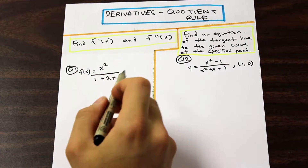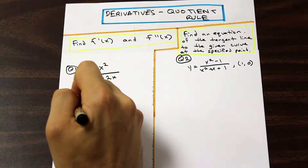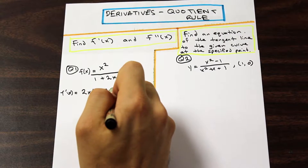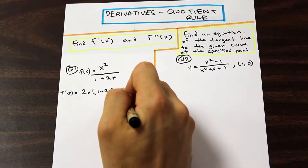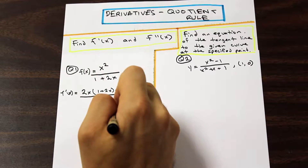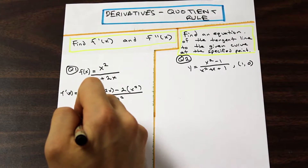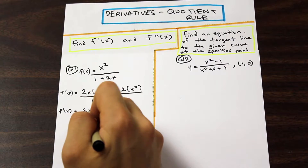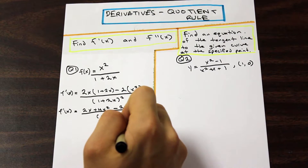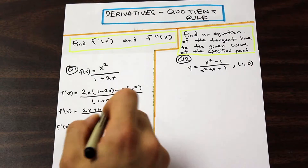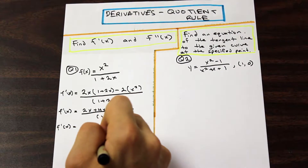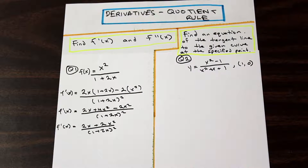Let's go ahead and apply the quotient rule. We have f prime of x equal to the derivative of the top, which is 2x, times the bottom, 1 plus 2x, minus the derivative of the bottom — that's just going to be 2 — times the top, x squared. And that is all going to be over the square of the bottom. Simplifying: 2x plus 4x squared minus 2x squared over (1 plus 2x) squared, which gives us 2x plus 2x squared over (1 plus 2x) squared. That is our first derivative.